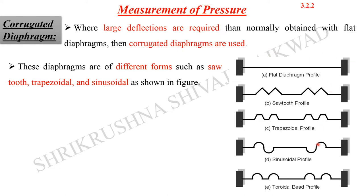You can see over here the various types of diaphragms represented: the flat diaphragm we saw in the last lecture, and then the trapezoidal, sinusoidal, and toroidal profiles shown in different ways. These different shapes are used in circuits for the measurement of tensions and deflections, and are obviously attached to the pressure to be measured.